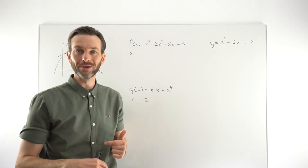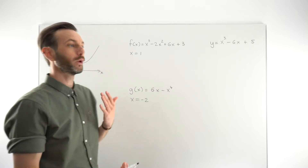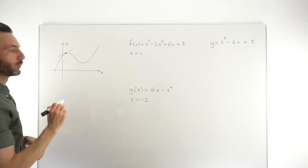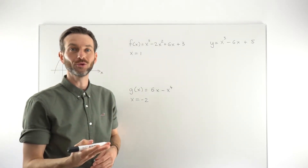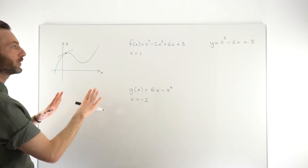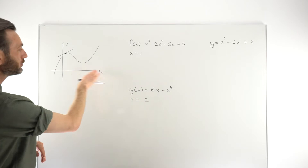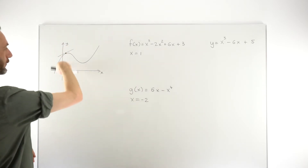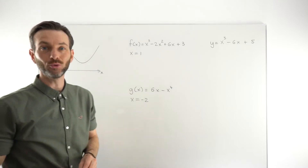In this class, we're looking at whether a function is increasing or decreasing, which is really just talking about the y values of the function. A function is an input-output machine — the input values are the x values, and the vertical values on a graph, the y values, are the output values.